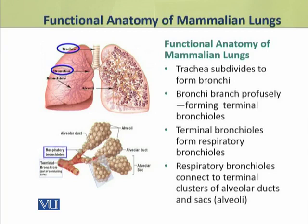These terminal clusters are just like in a grape fruit — if we look at grape fruits, the branches run along but at the end, a cluster of small fruits is attached to the branch. Similarly, these alveoli are attached to the alveolar ducts along with the respiratory bronchioles, and so these alveoli are present in clusters.